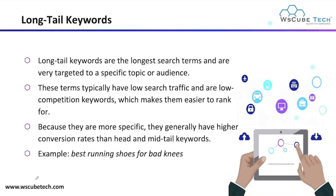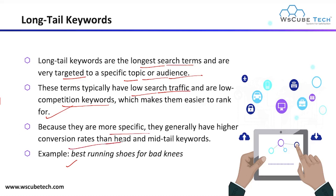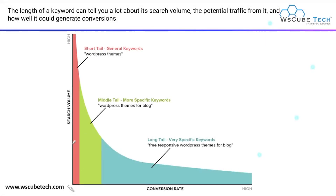Next we have long tail keywords. As the name shows, they are the longest search terms and are very targeted to a specific topic or audience. These terms typically have low search traffic and low competition, which makes them easier to rank for. People using long tail keywords are interested in a particular product and want more specific information. Because they are more specific, they generally have a high conversion rate. Examples: 'best running shoes for bad knees' or 'best running shoes for women.' The length of a keyword can tell you a lot about its search volume, potential traffic, and conversion potential.